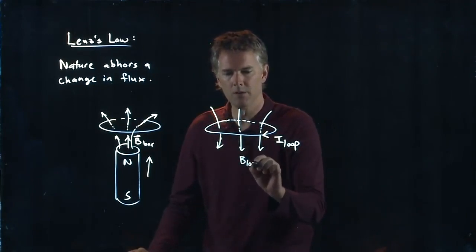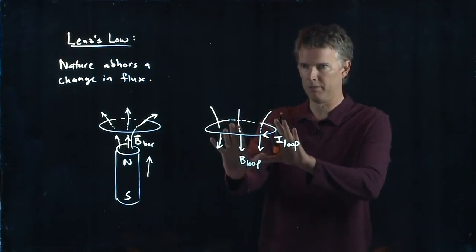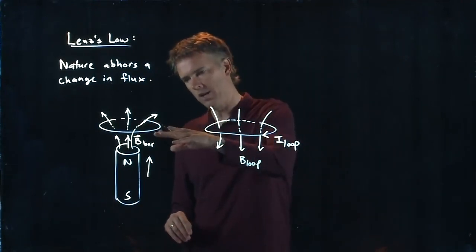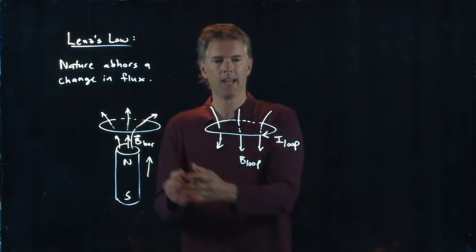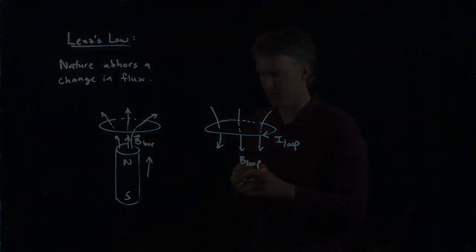And this is B due to the loop. I drew it without the magnet here for simplicity. But the idea is that nature abhors a change in flux. And so if flux is increasing from some other source, it's going to do whatever it can to make it decrease.